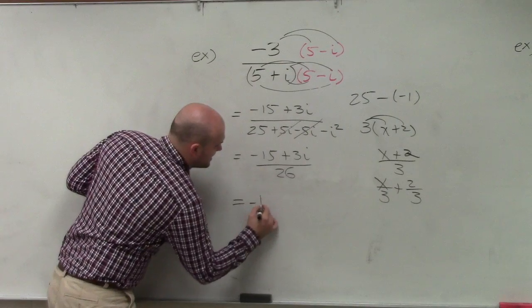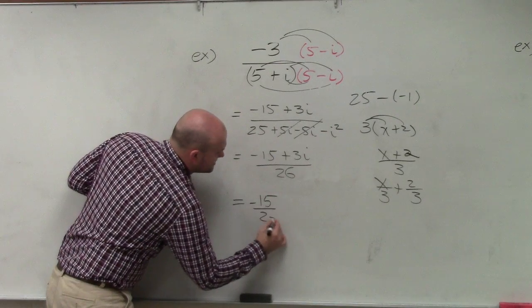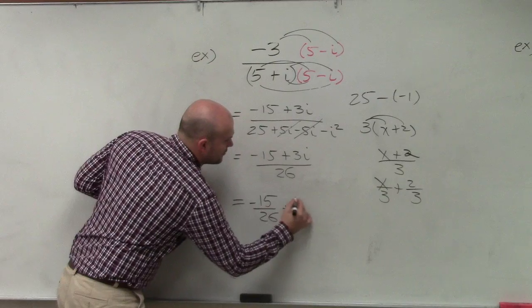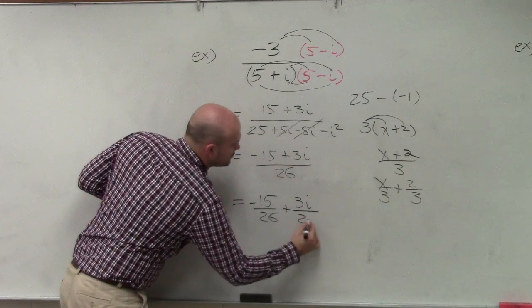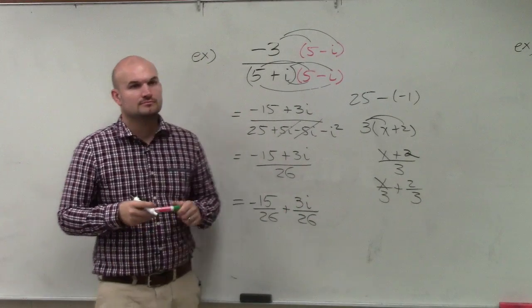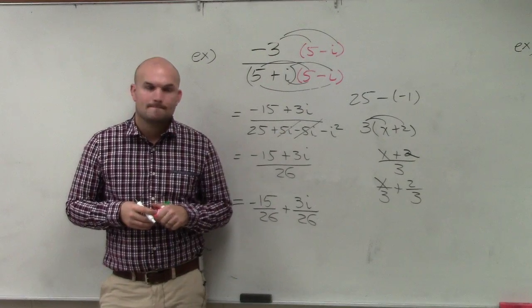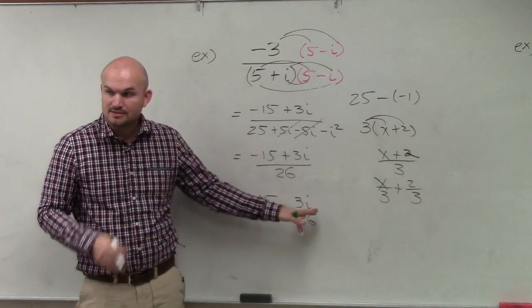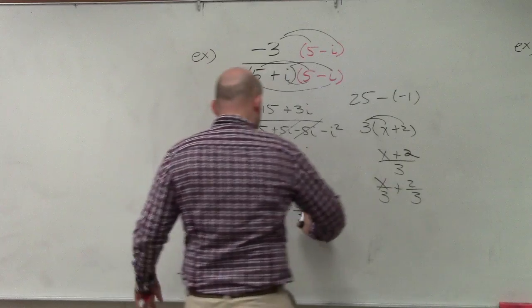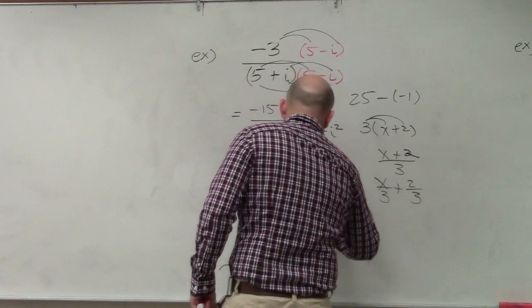So therefore, this can be written as negative 15 over 26 plus 3i over 26, a plus bi. Or you could also write the i at the end like that.